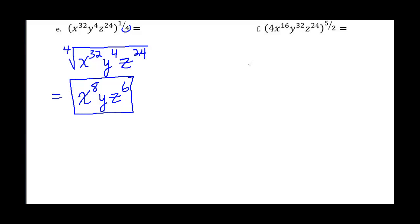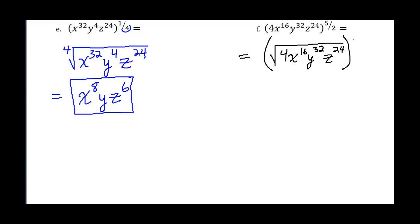Let's look at one more example. Part f: 4x to the 16th, y to the 32nd, z to the 24th, all raised to the 5 over 2 power. For a to the m over n, there are two ways to write this. I'm going to write this as the square root of 4x to the 16th, y to the 32nd, z to the 24th, and wait to raise everything to the 5th power at the end. If I raise everything to the 5th on the inside first, I'd get huge numbers to eventually take the square root of, so it's easier to take the square root first.